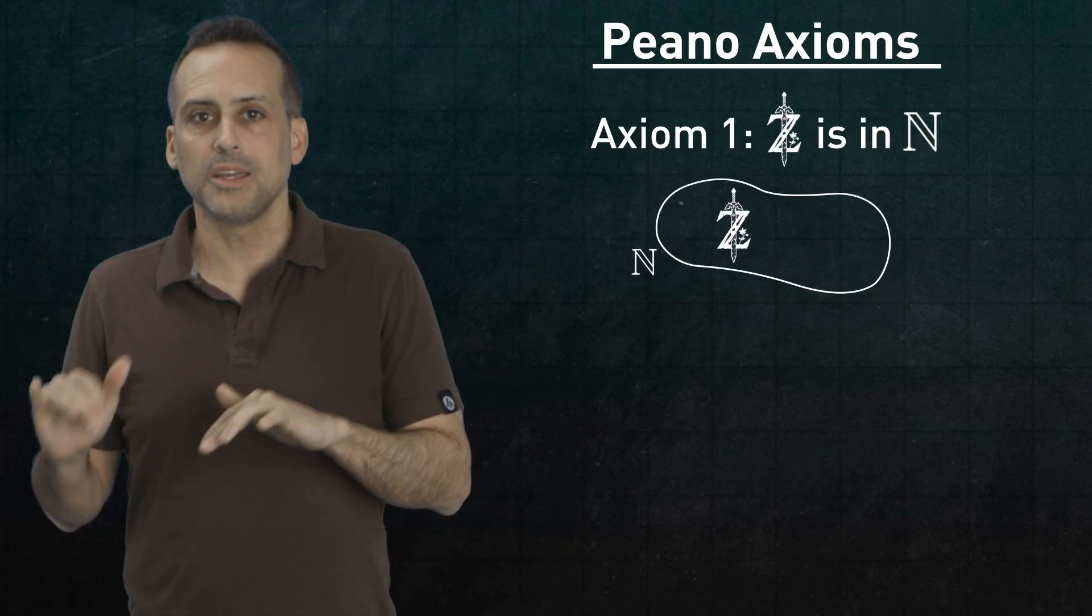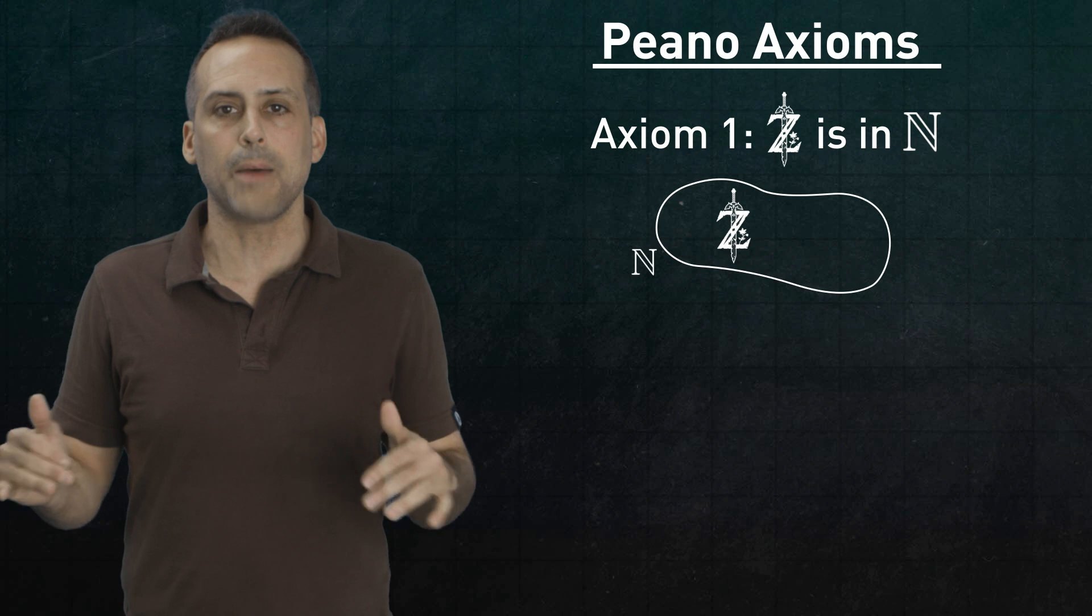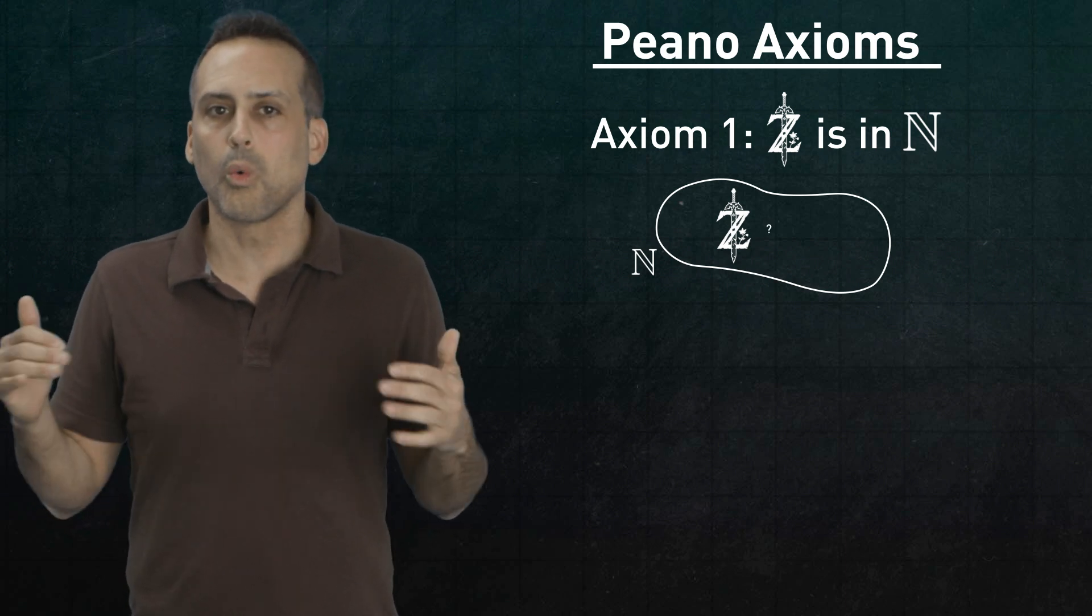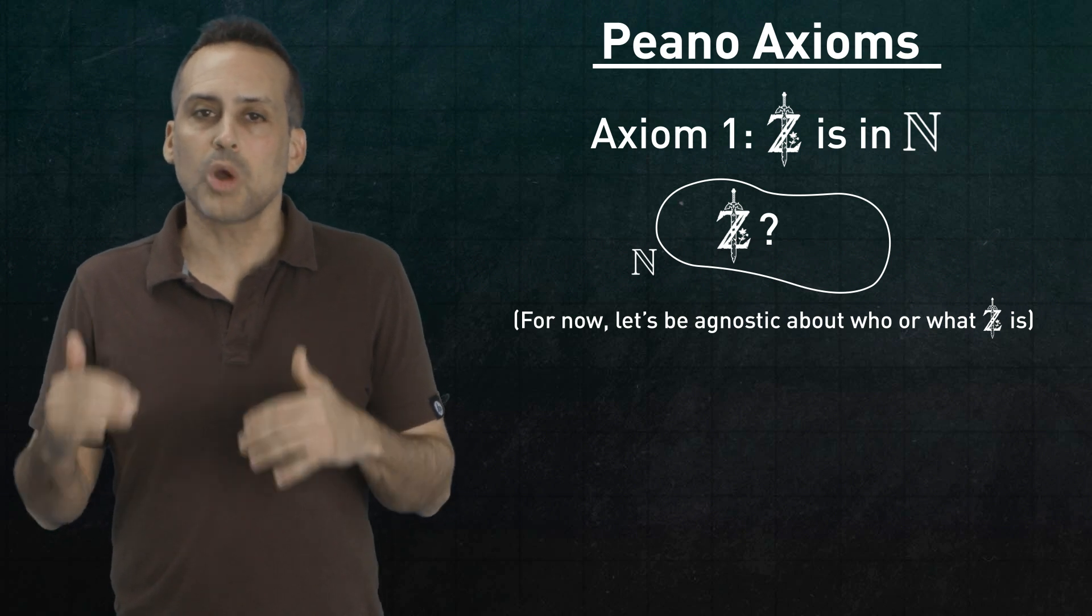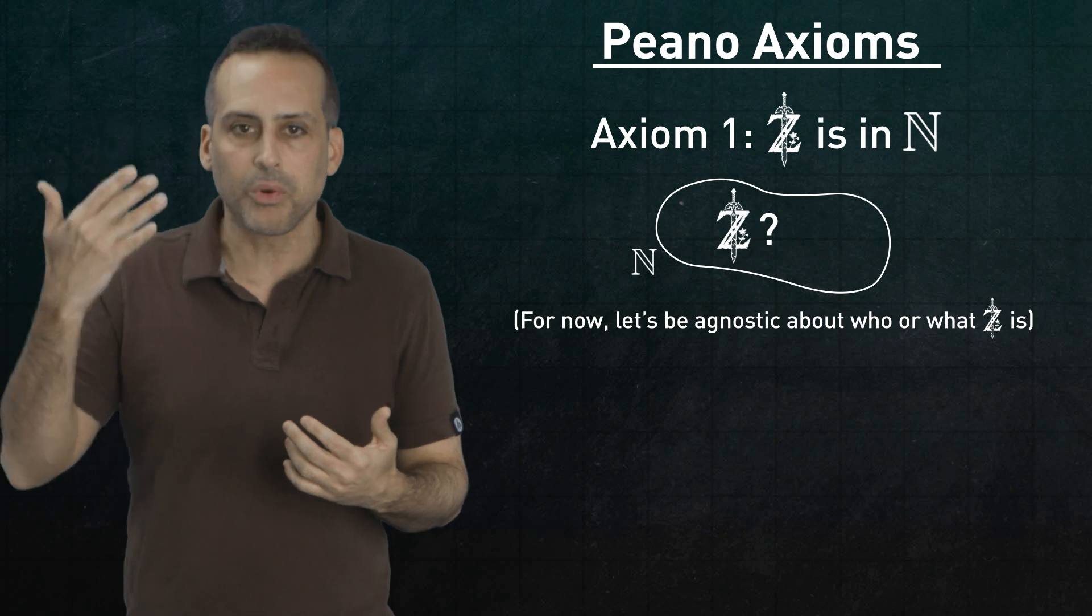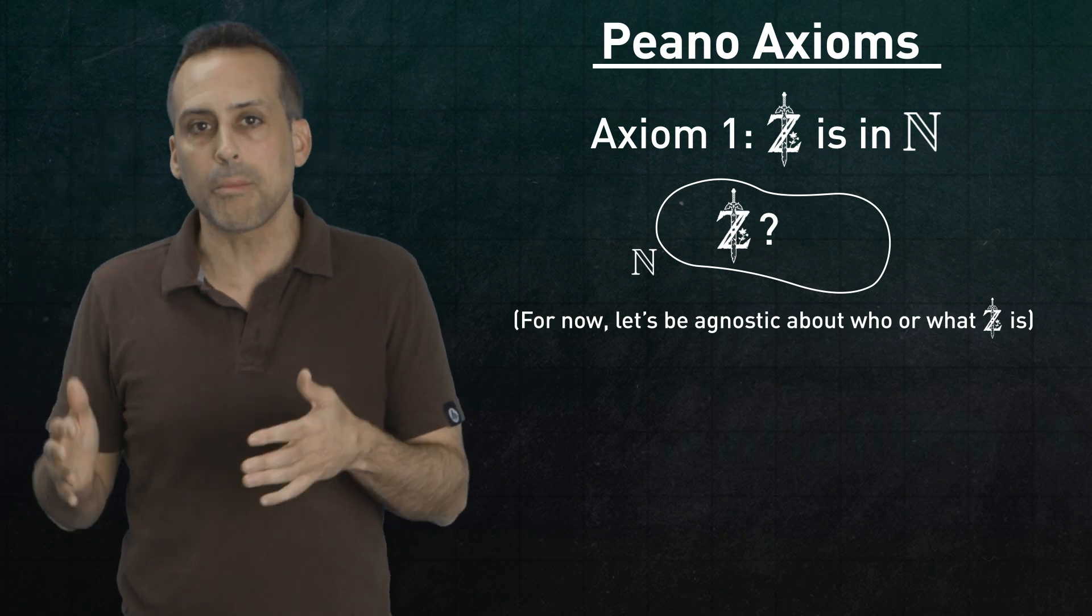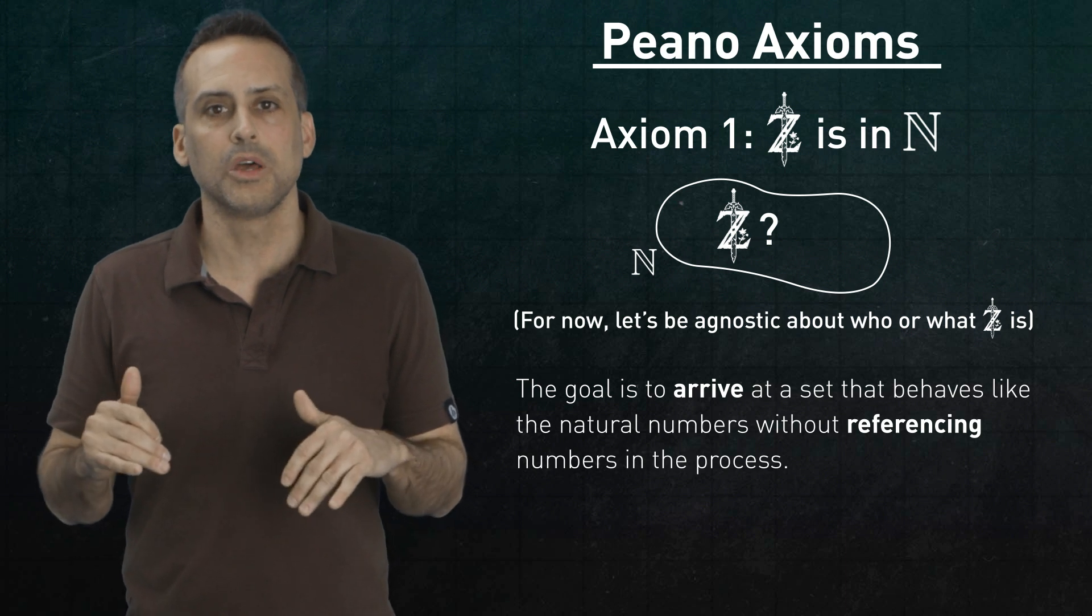Axiom 1, Zelda is in n. This is basically a declaration that set n isn't empty. Zelda is in there. Who or what is Zelda? Don't worry about it. It'll turn out to be the zero that you know and love. But I'm trying to use nomenclature here that's not too suggestive, so that you won't be tempted to bring in preexisting concepts. Remember, the goal is to arrive at numbers without referencing numbers.